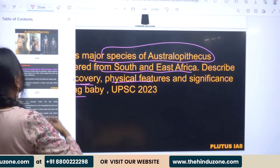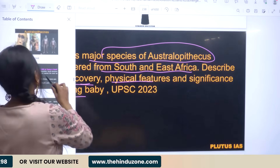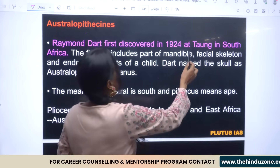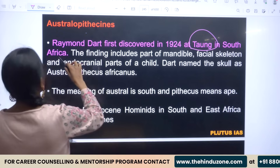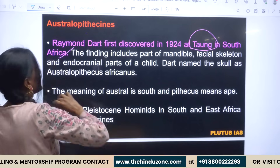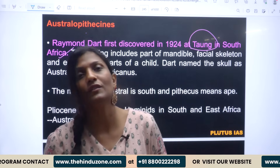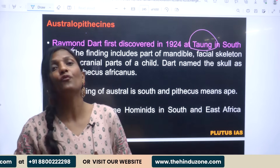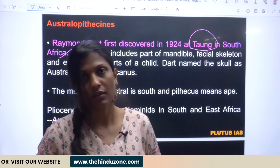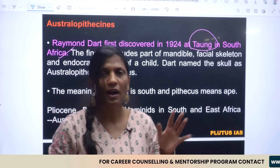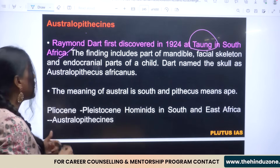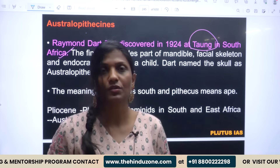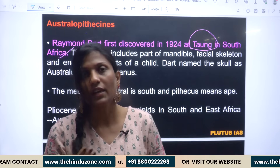It was Raymond Dart who discovered Taung, known as Taung Baby, in south Africa. They are asking about the significance of this discovery. The significance is that it made clear that Australopithecus evolved from Africa and not from Asia. We will now look at what type of specimen and fossil evidence we have received.